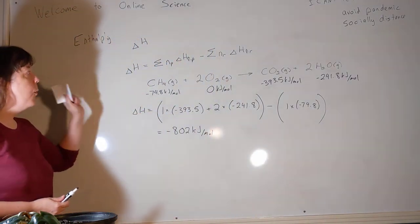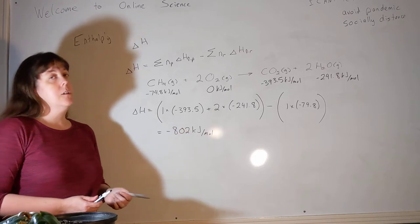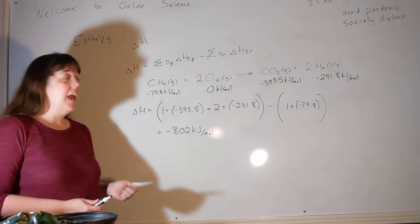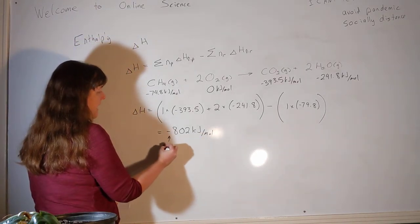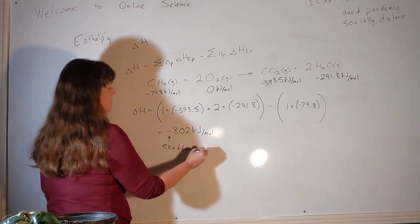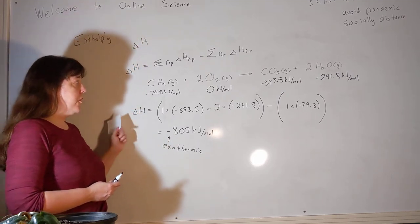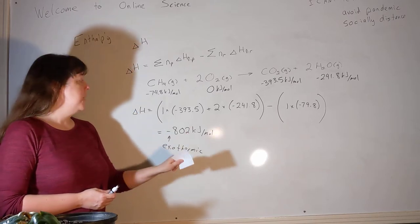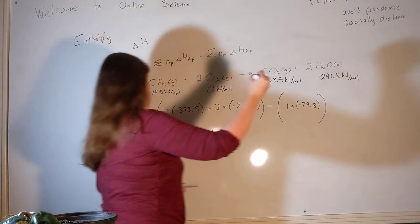So that means that every time one mole of reaction takes place, 802 kilojoules of energy are released. That's a fair amount of energy. And this shouldn't surprise us. This negative sign tells us that this is an exothermic reaction. We know this is an exothermic reaction because every time we light a Bunsen burner in the lab, methane gas is what's coming out of that burner and we do this chemical reaction because we want to use the heat that it produces.